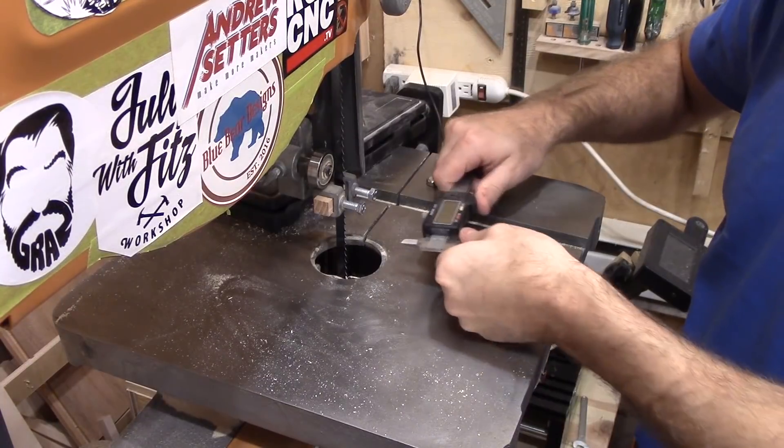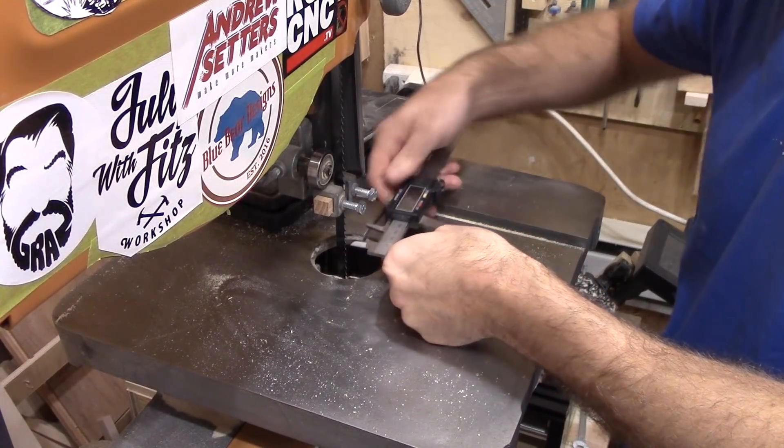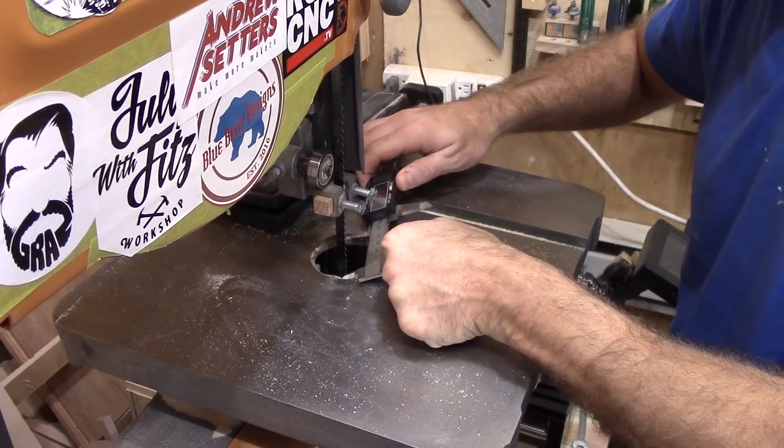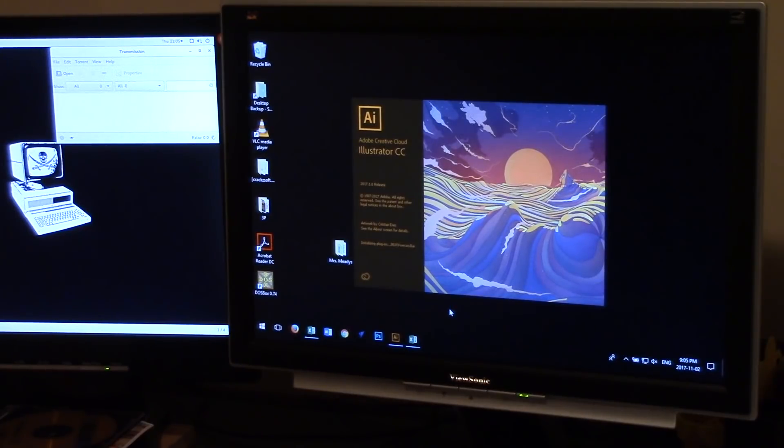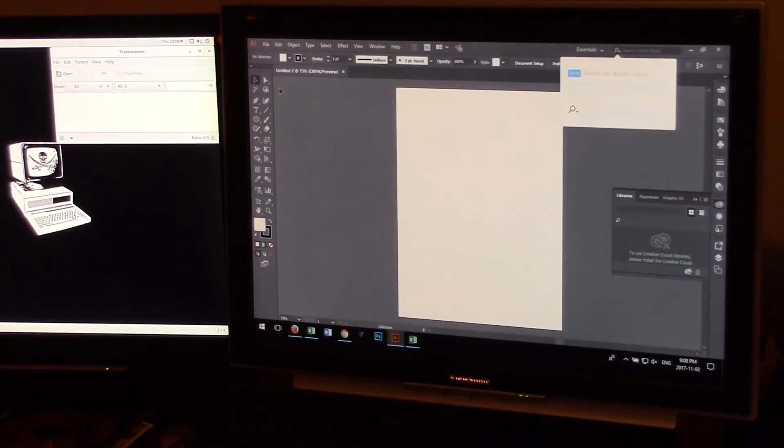I started off by putting calipers to the bandsaw throat. Yes, I use millimeters, because no, I don't want to deal with thou. The measurement I got was 63.65 millimeters, which is most likely the same for all of the 14-inch Chinese bandsaws. Hit me up in the comments if you want the file.